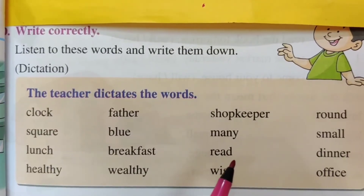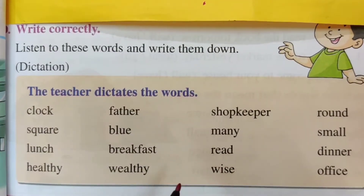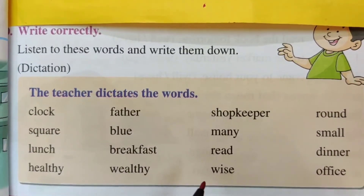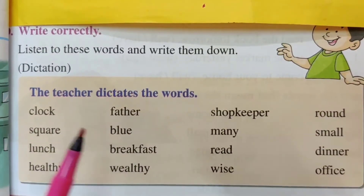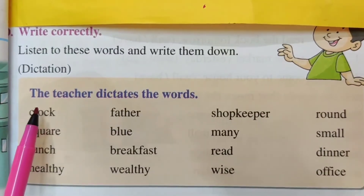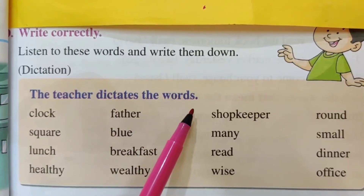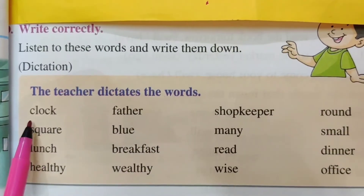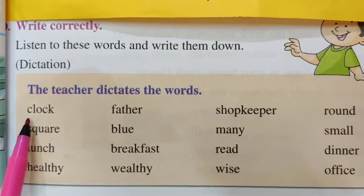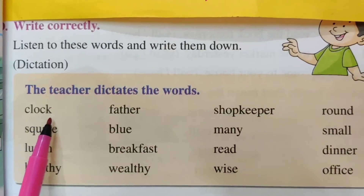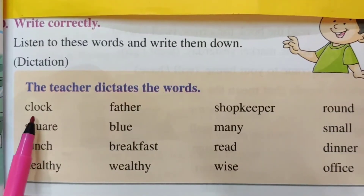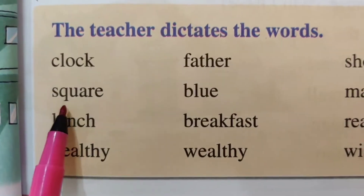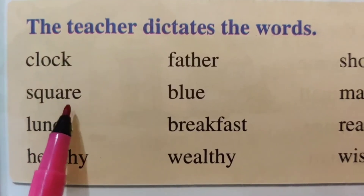Okay, shall we read once. Now I will read for you once, but at home practice two or three times. See — the teacher dictates these words, read them. C-L-O-C-K — clock. S-Q-U-A-R-E — square.